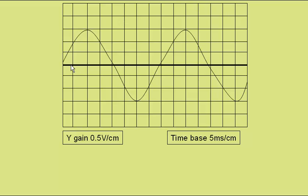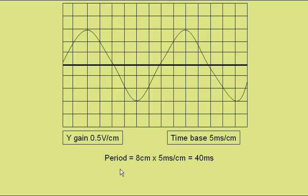So, for example, with this wave, the time period would be from here to here — a distance of 8 centimetres. So the time period is equal to 8 centimetres multiplied by the time base setting of 5 milliseconds per centimetre, giving 40 milliseconds time period.